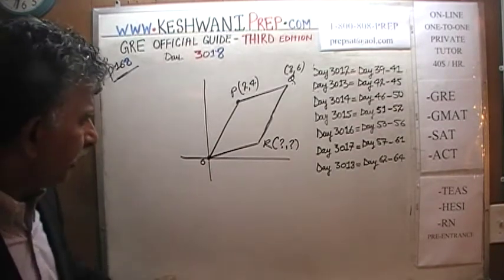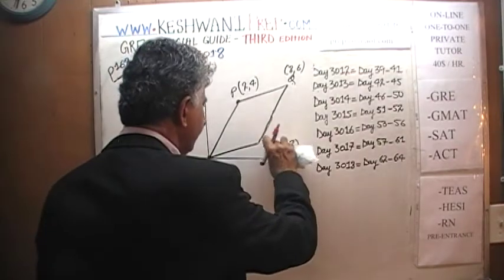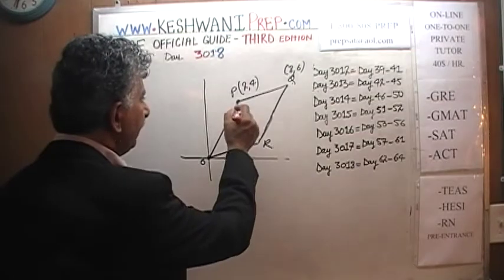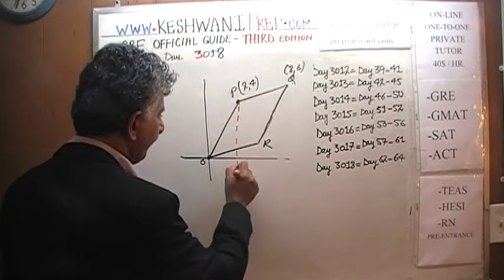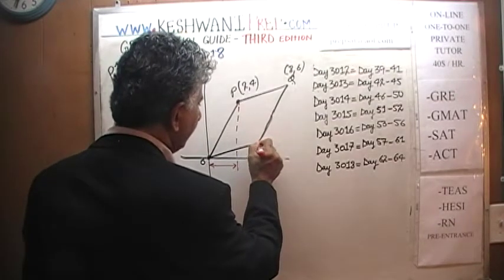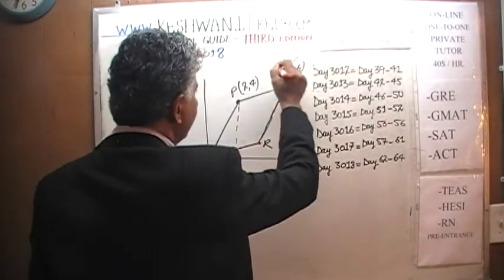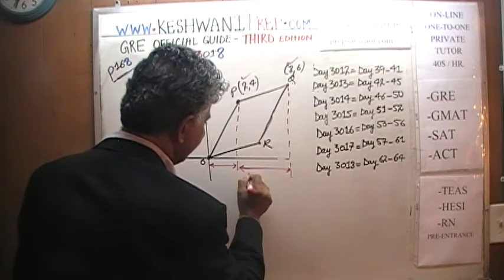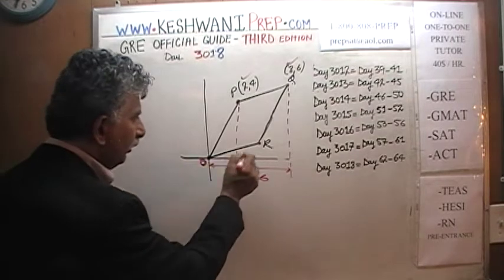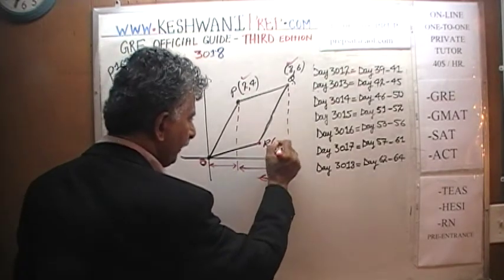To find the x-coordinate of point R: because it's a parallelogram, the distance from O to P horizontally equals the distance from Q to R. The x-coordinate of Q is 8, and P is at x = 2, which means this horizontal distance is 6. So the distance from O to R must also be 6, meaning the x-coordinate of R is 6.